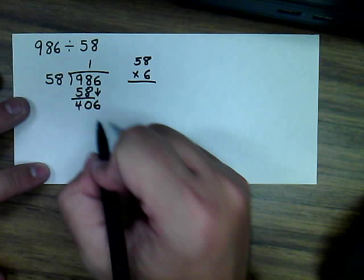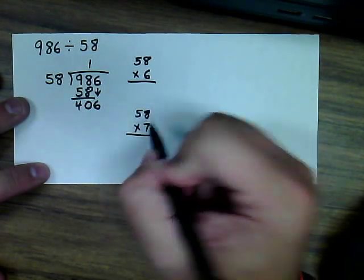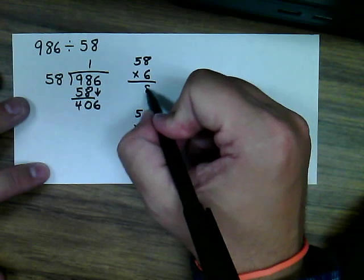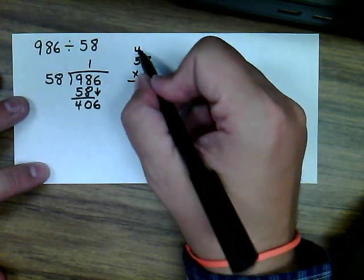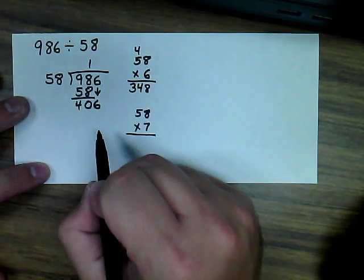Since it's close, I'm also going to try multiplying 58 times 7. See where that takes us. So 6 times 8 is 48. 6 times 5 is 30, plus the 4 is 34. So 348 is a little bit on the low side here.